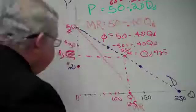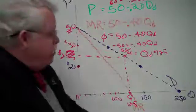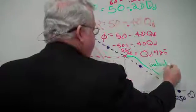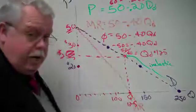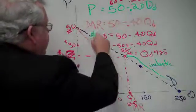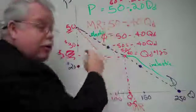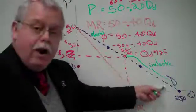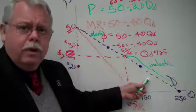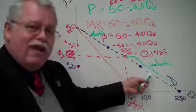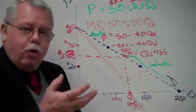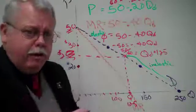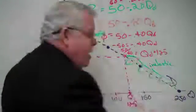You may also recall that when you're operating on this demand curve, the bottom half of the curve is the range of inelastic demand, and the upper half of the curve is the elastic demand. What do we remember about the inelastic part of the demand curve? Is this where you want to operate? The answer is no. If the demand for your product is inelastic down here, that means when you raise your price, you'll bring in more revenue. We don't want to operate in this range of the demand curve.